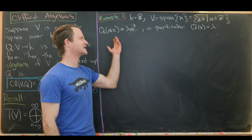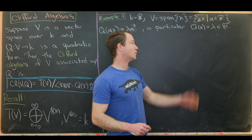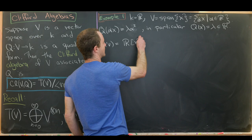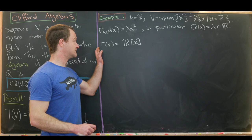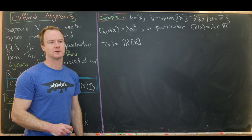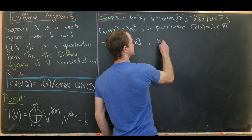So λ is just some fixed real number built out of the quadratic form. In particular, if we evaluate just the basis vector x, we get the number λ. Let's recall that T(V) in this case was in fact just the ring of polynomials. This is the only case when the tensor algebra coincides with the symmetric algebra or the ring of polynomials — because we only have a single-dimensional vector space. Instead of writing x⊗x, we generally use the notation x², and we'll use that notation within the Clifford algebra as well.